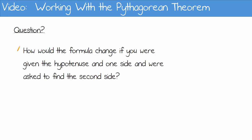Question. How would the formula change if you were given the hypotenuse and one side and were asked to find the second side? The answer, side 2 squared equals hypotenuse squared minus side 1 squared.